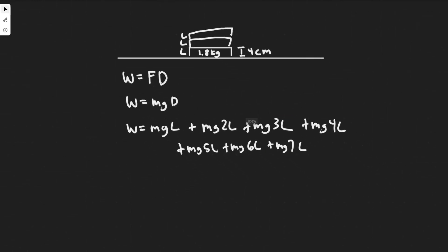So if we add all these up, you can just add these like terms. It's going to be mg, and then add these up, it's 28L. So that's going to be how much it is. It's just the mass times gravity times 28 times the length.